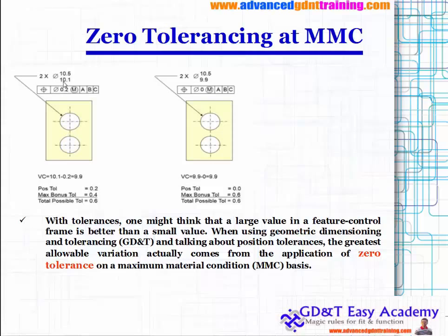Let me compare one by one. For this particular hole, the variation is 10.5 to 10.1. The 10.1 is the MMC condition because this is a hole. If you look at this callout, 9.9 will be your MMC condition. The difference between 10.5 and 10.1 gives you 0.4 as bonus tolerance, and you have a positioning tolerance of 0.2, so collectively both add up to 0.6. Similarly, here you have absolutely zero positioning tolerance, but the difference between 10.5 and 9.9 is 0.6, so the bonus tolerance is 0.6 and positioning tolerance is zero — total possible tolerance is also 0.6.